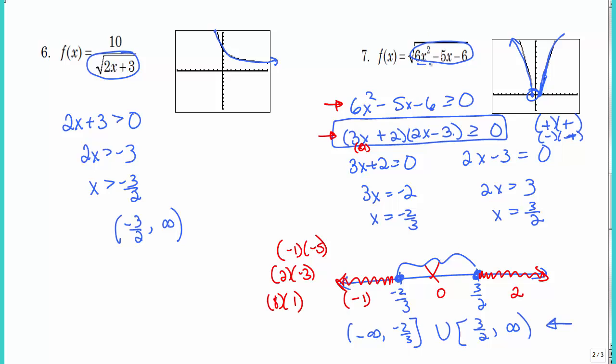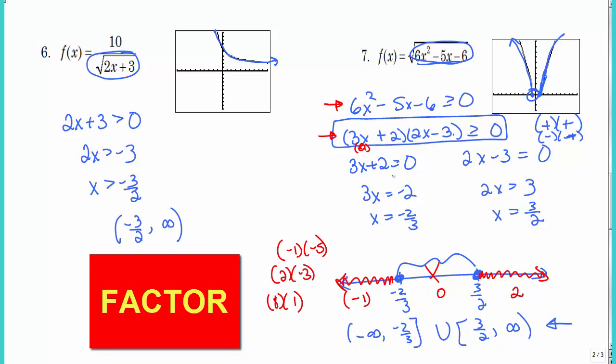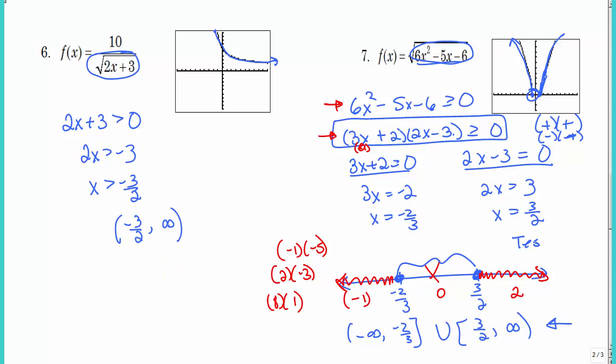There is no shorter way to do this. Set it greater than or equal to zero, factor, set each factor equal to zero, then do test points on a number line. Pick numbers in each region — something less than negative 2/3, something between the two values, and something greater. You can use your calculator to help, but you still have to do the algebra.